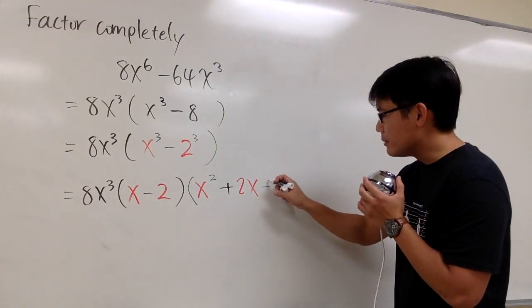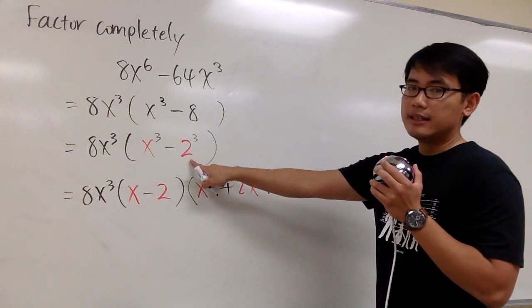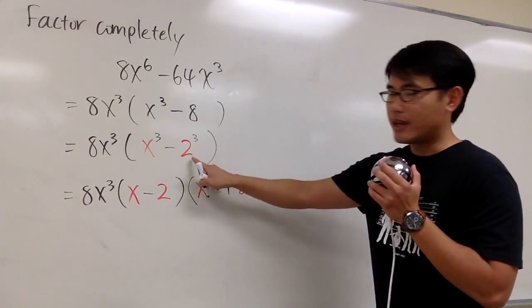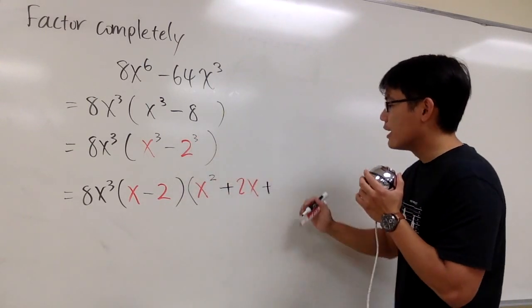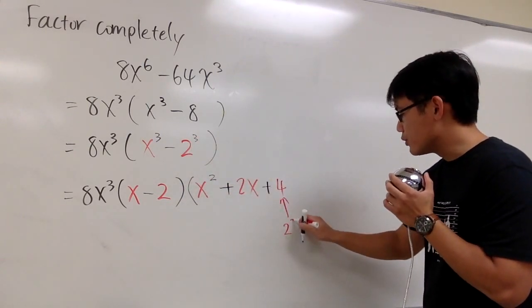And then the last part right here is going to be plus this square, so 2 square. The number 2 in red, square that, which is 4. So, this is 2 squared.